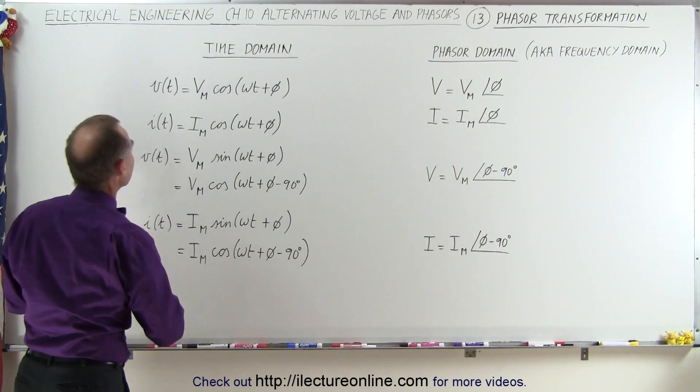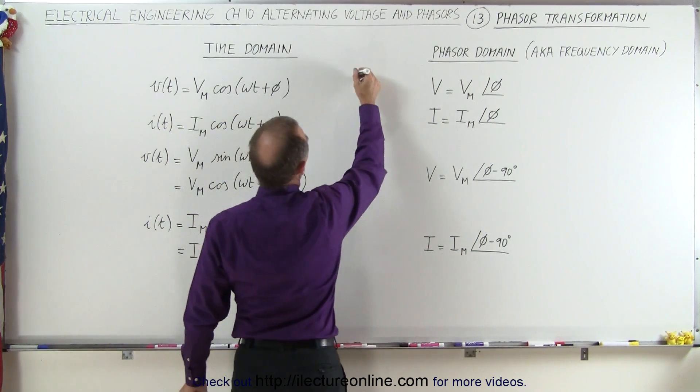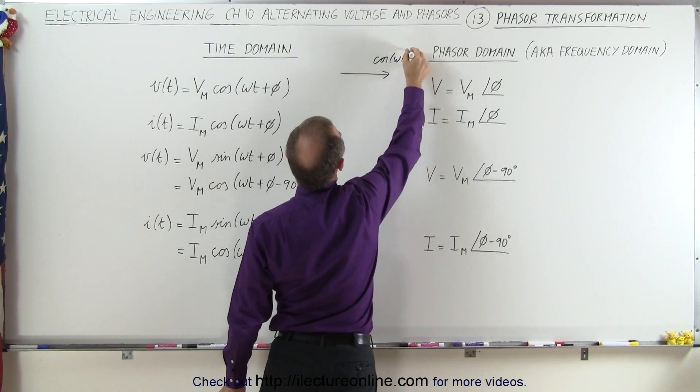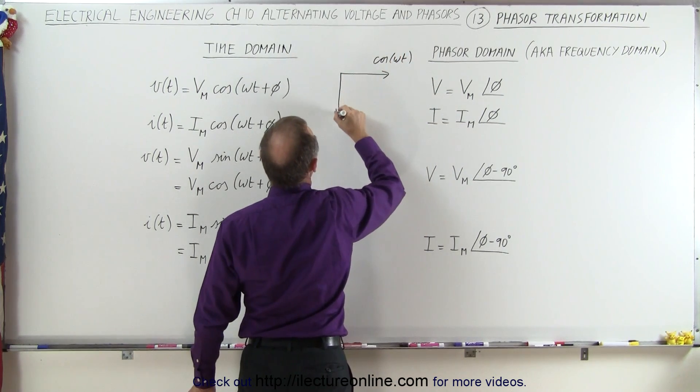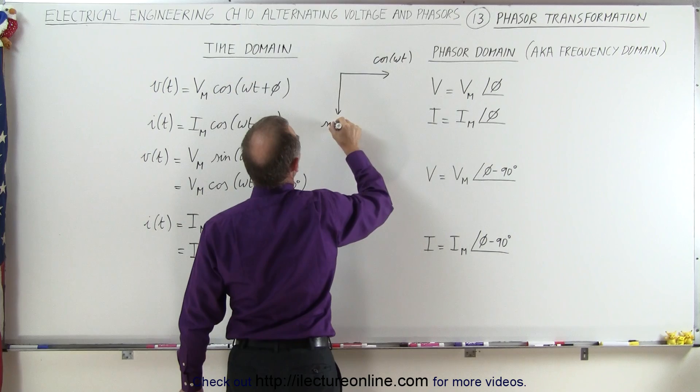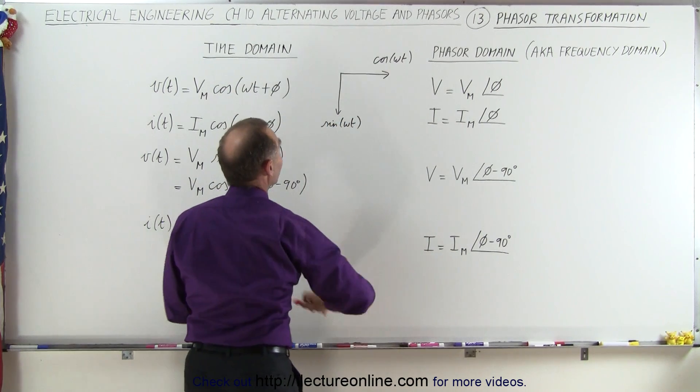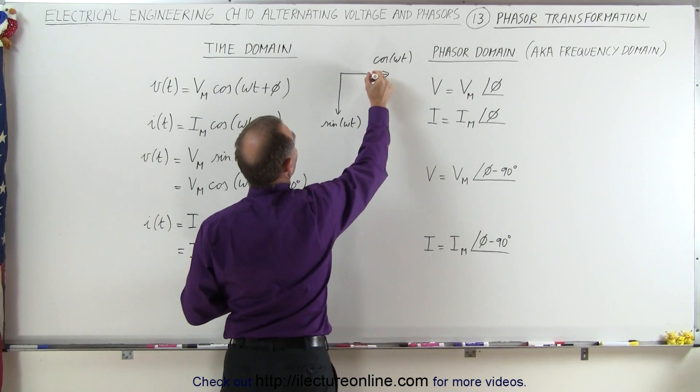Remember when we had the vectors like this, so we had the horizontal axis which was the cosine of omega t, and then we had the sine right here, so it would be the positive sine of omega t. And then remember that if we want to go from the cosine of omega t to the sine of omega t, there would be a shift of minus 90 degrees.